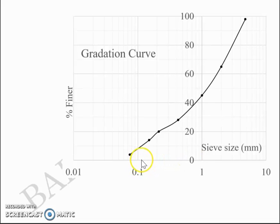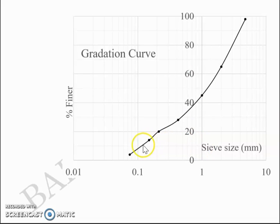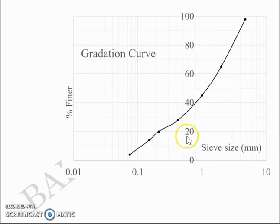d10 is the size that corresponds to 10 percentage finer. d30 is the size that corresponds to 30 percentage finer, and likewise we have d60. To get d10, you draw a line through 10 percentage finer, let it meet the curve, drop a perpendicular, and that will meet the sieve size axis at a point corresponding to d10. Likewise, you get d30 and d60 from the graph.